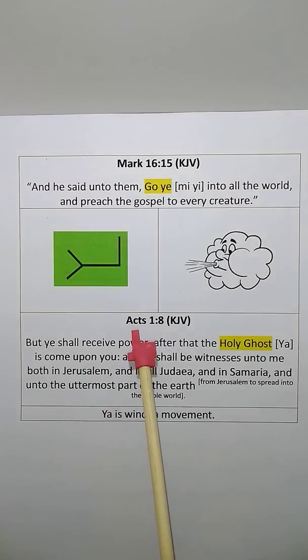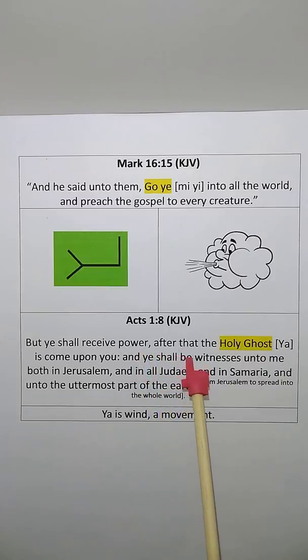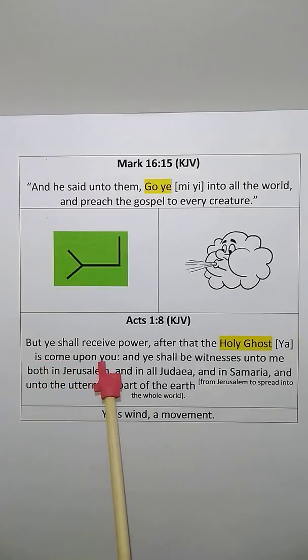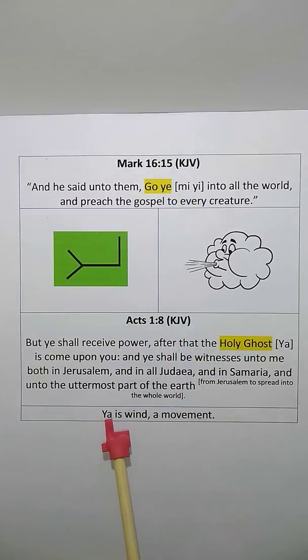Which we also see in the book of Acts, chapter 1, verse 8. I read: But ye shall receive power, after that the Holy Ghost, which is the Ya, the wind of Ya, is come upon you. And ye shall be witness unto me, both in Jerusalem, and in all Judea, and in Samaria, and unto the outermost part of the earth. From Jerusalem to spread into the whole world. So Ya, or to go, means it's a movement, like the wind. To go means to move.